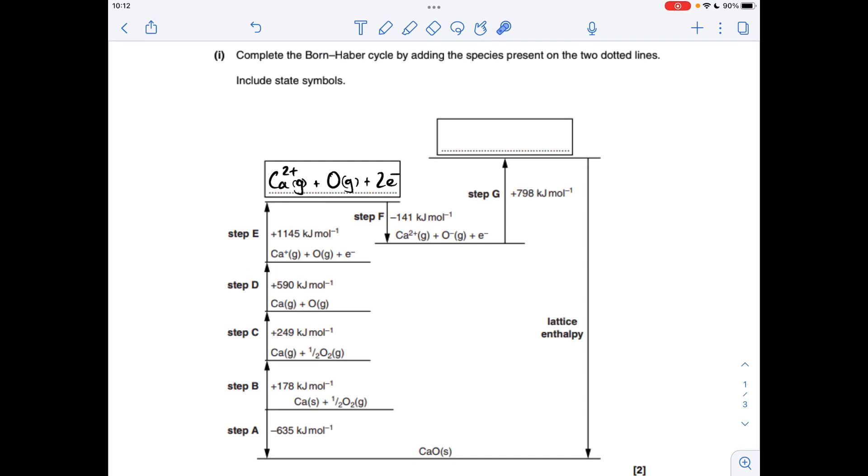So moving on to step G, what's happening here? Well we're going to put that electron onto that O- gas and turn that into O2- gas.